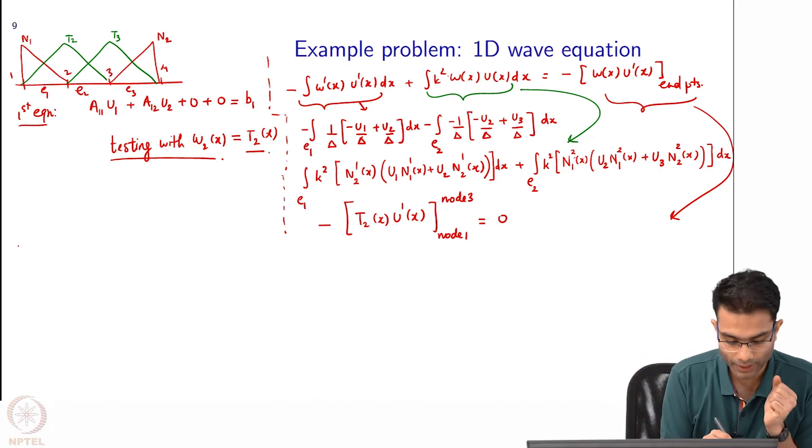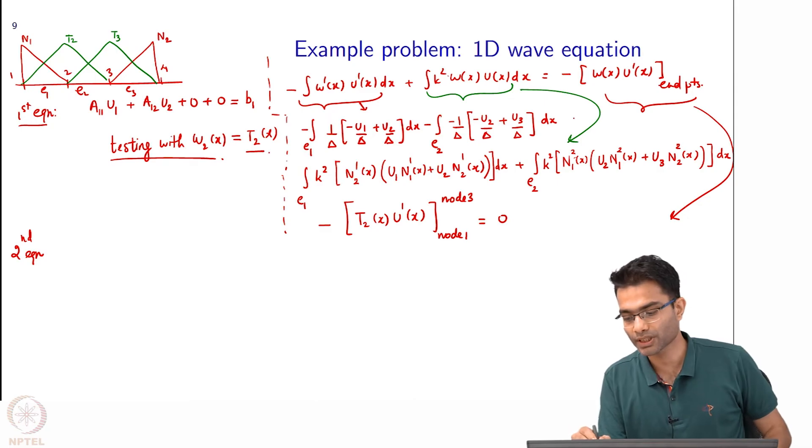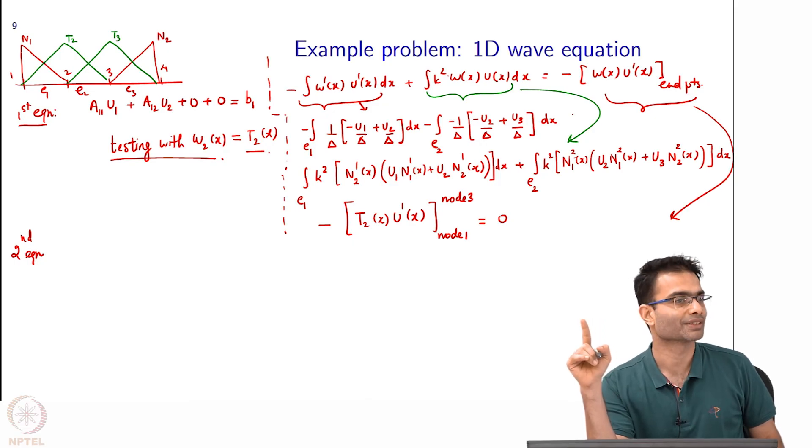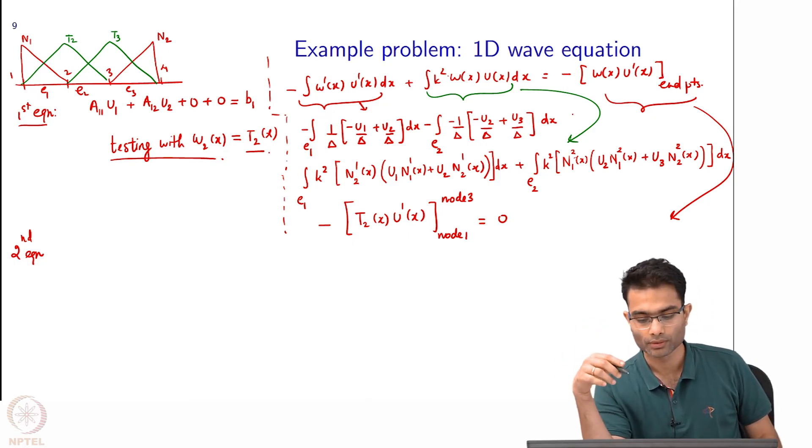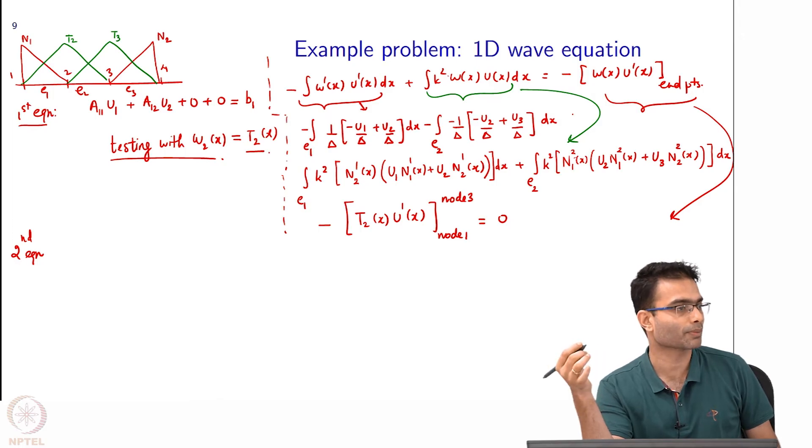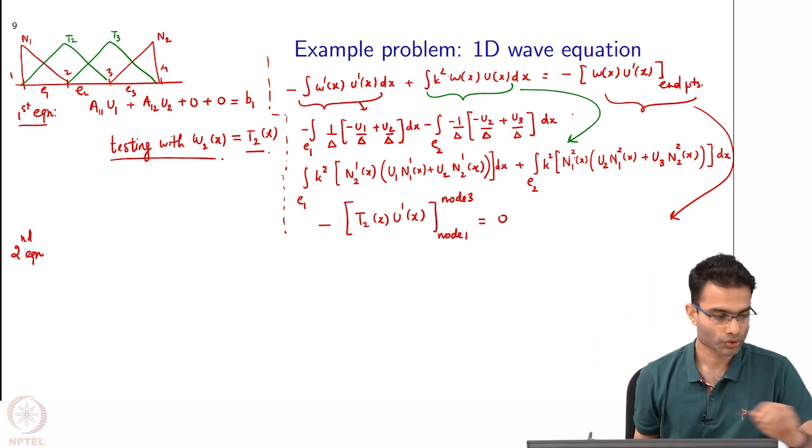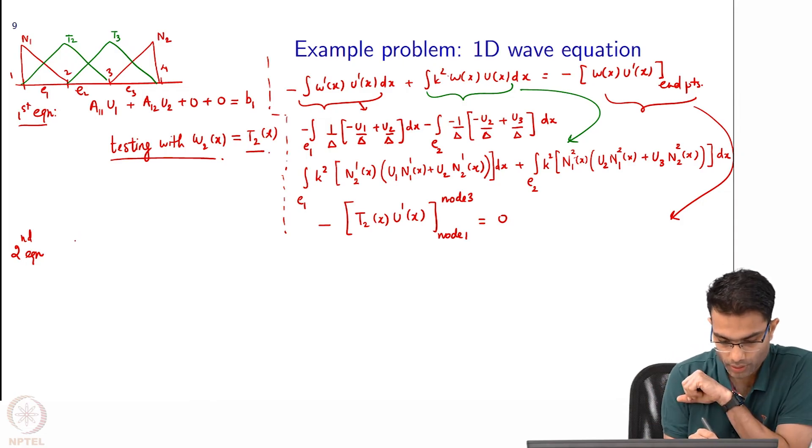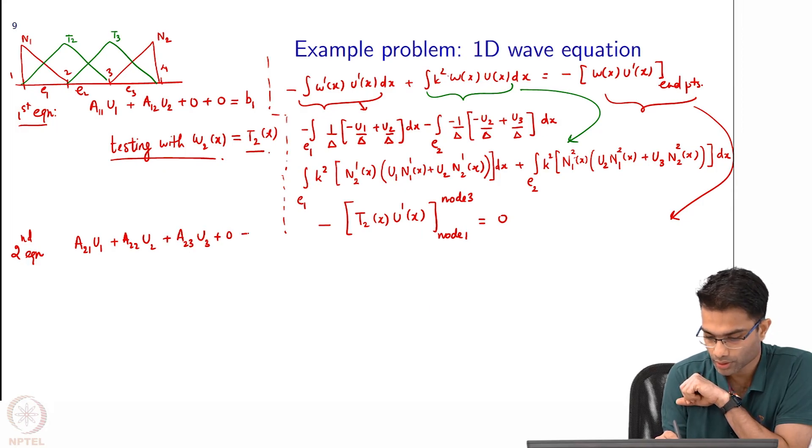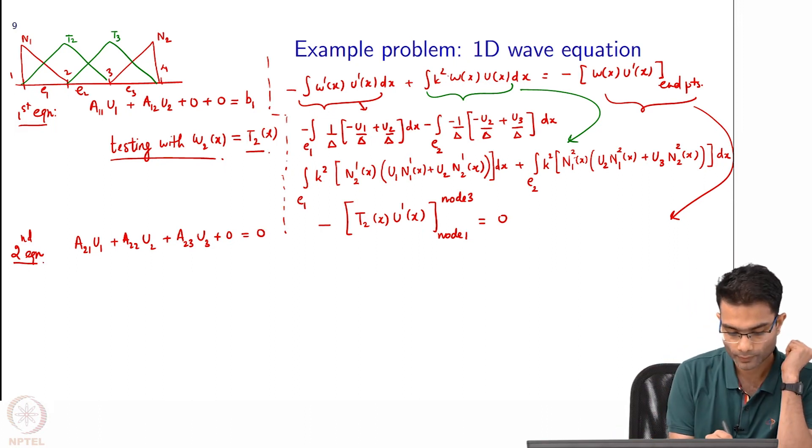Now having done this the second equation becomes. Notice this first equation over here, what all variables does it have? u1, u2, u3, and they are all constants as a function of x, integrating them is trivial. Second thing quadratics with k. It can be done by quadrature. What variables does it have? u1, u2, u3. Is there any u4? Negative. This second equation over here becomes 0 times 0 times no, a21 u1, a22 u2, a23 u3 plus 0 is equal to 0.